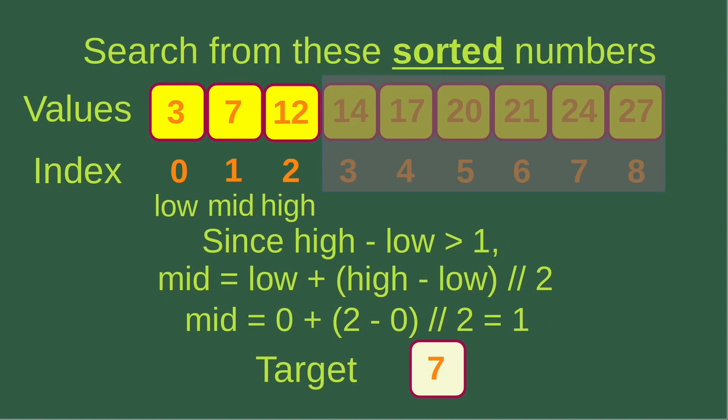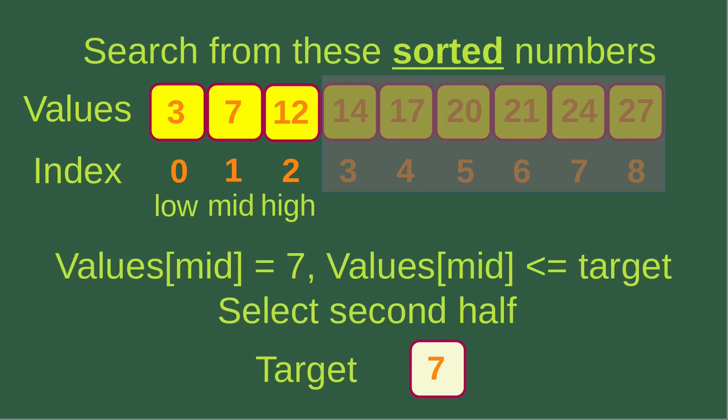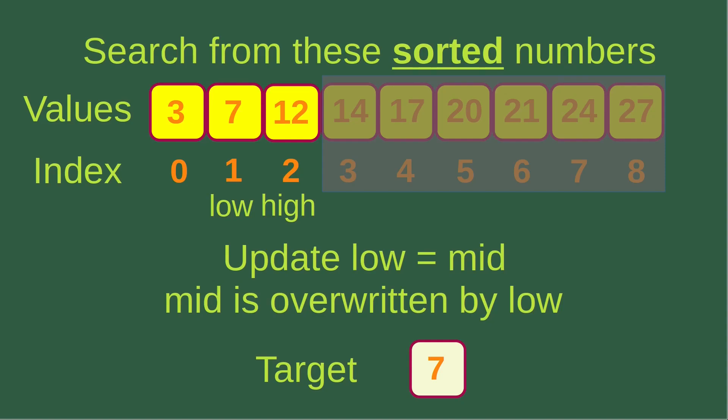I start the iteration again, checking the condition: high is two, low is zero, so high minus low is two — still larger than one. Using the formula, I get one as the mid-index, which corresponds to a value of seven. Since the mid-index value is smaller than or equal to the target, I update the low index to become the mid-index. Now the low index becomes one and the high index is still two.